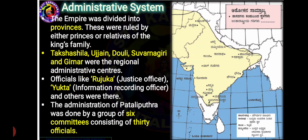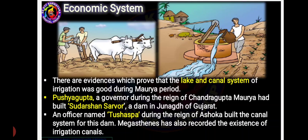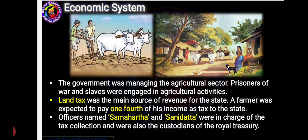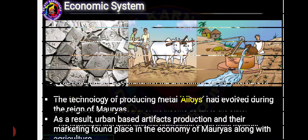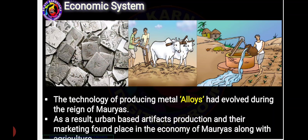There were six committees consisting of 30 officials. Regarding the economic system, they followed irrigation. Pushya Gupta, a governor during Chandragupta Maurya's reign, built the Sudarshan Sarovar dam at Junagad in Gujarat, and Tushaspa built canals. Agriculture was the main occupation, and prisoners of war and slaves were engaged in agricultural activities. Land tax was the main source of revenue, and farmers paid one-fourth of their income as tax. Tax collection was done by Samartha and Sanidatta. The technology of producing metal alloys originated and marketing took birth during their time.